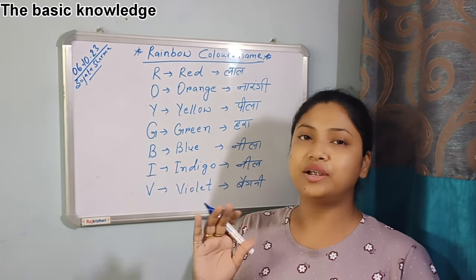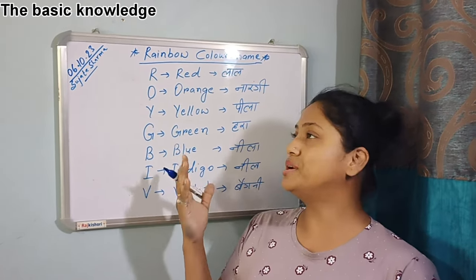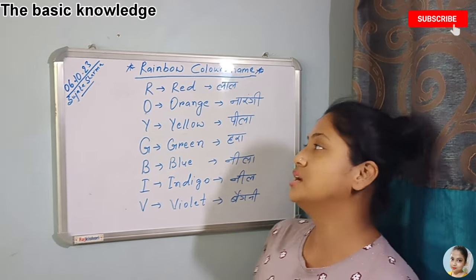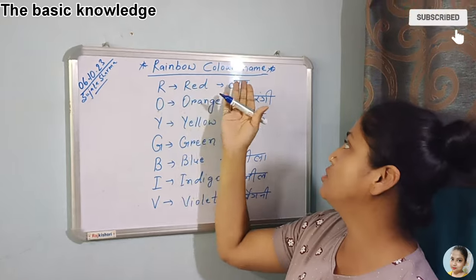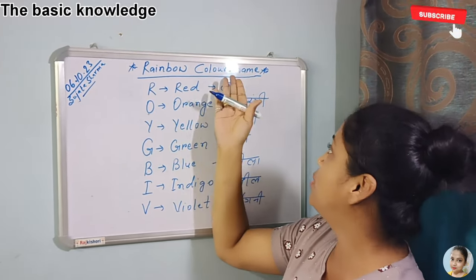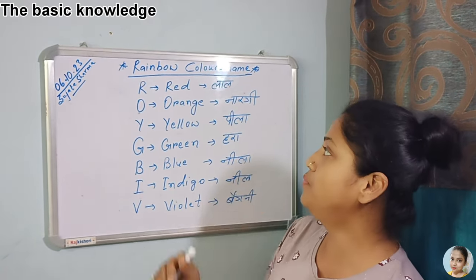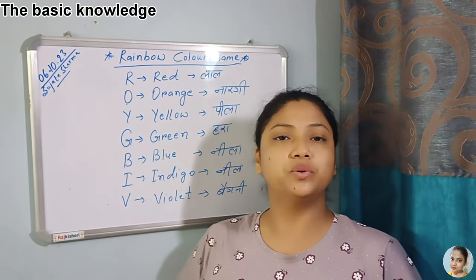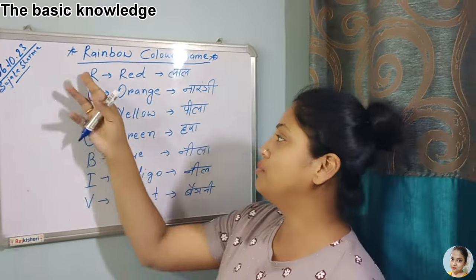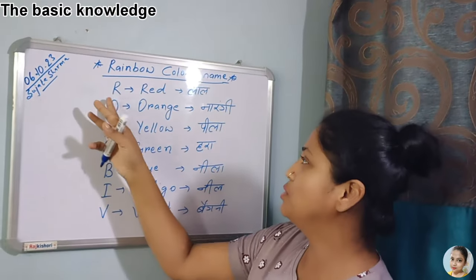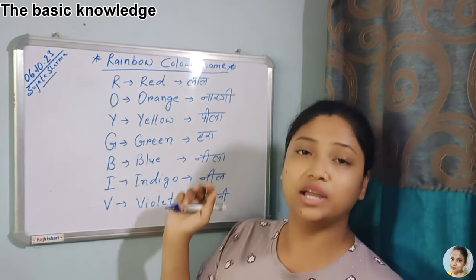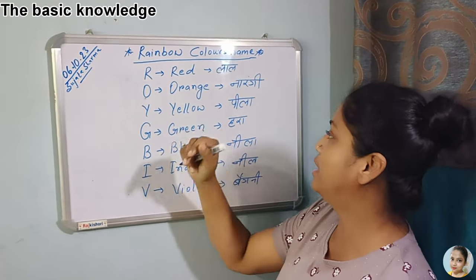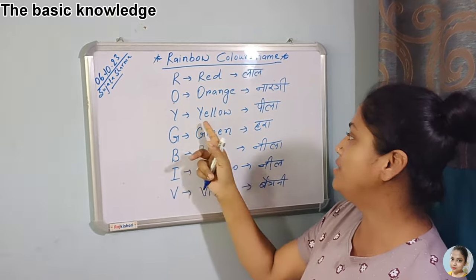Hi friends, welcome back to my channel The Basic Knowledge. Today's topic is rainbow colors name. A lot of children don't remember which colors are in the rainbow, so let's go ahead and remember: R for red, O for orange.